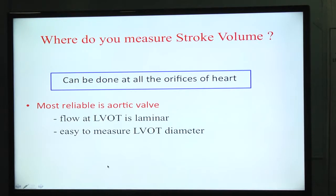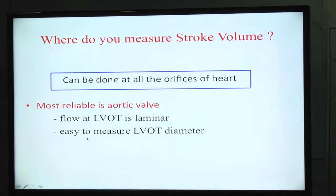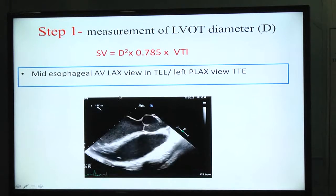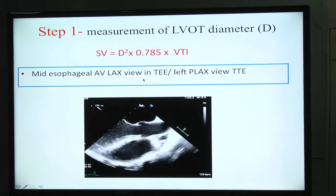Stroke volume can be measured at any of the four heart valves, provided there is no regurgitation and no shunt — in that case it will be the same at all orifices. But we measure it across the LVOT or aortic valve because the flow at the LVOT is laminar and it is easy to measure the LVOT diameter. We measure stroke volume in two steps: step one, measure LVOT diameter; step two, measure the LVOT VTI.